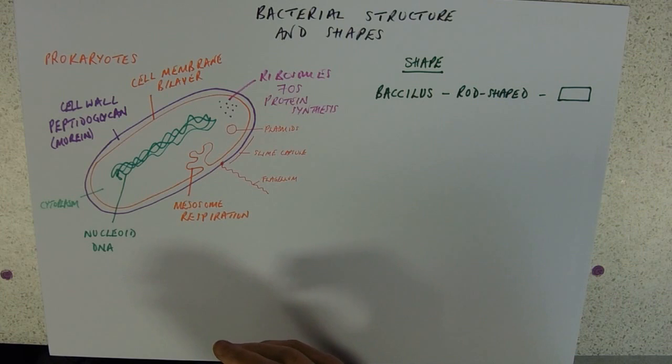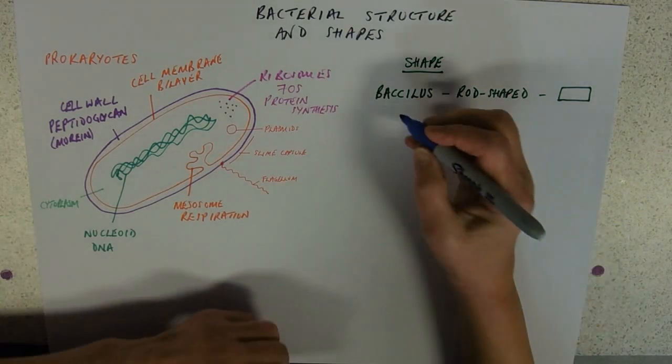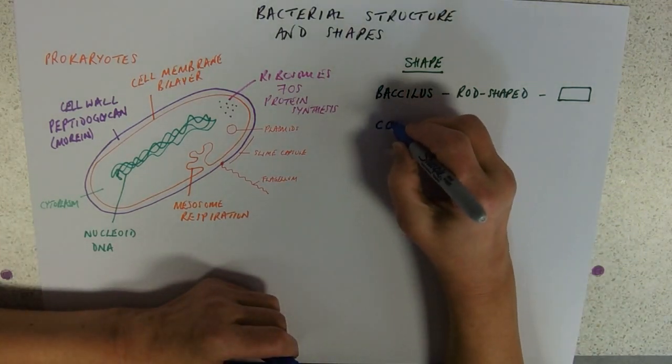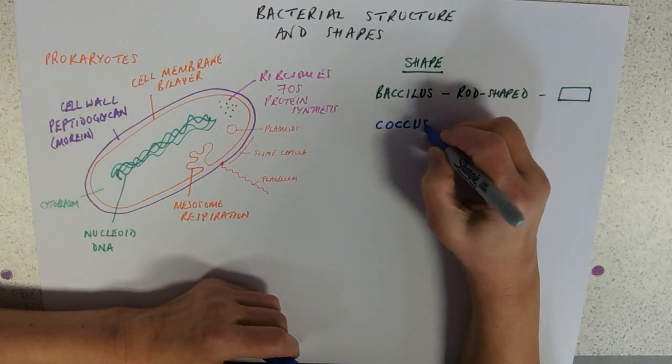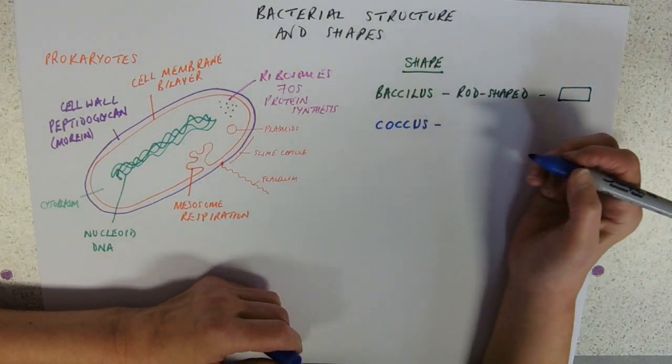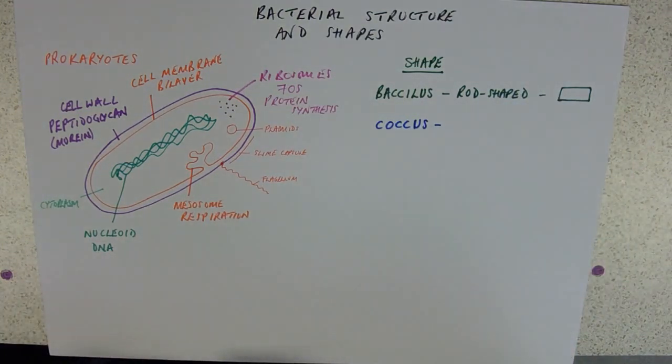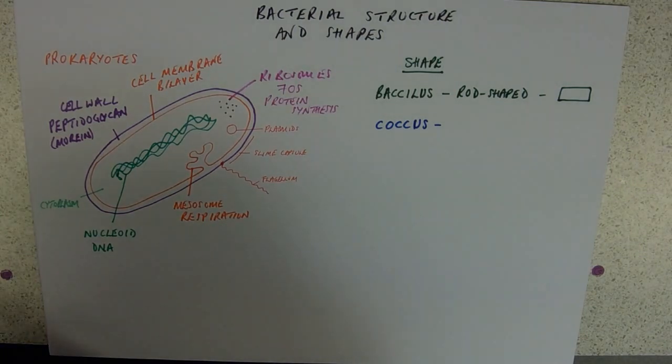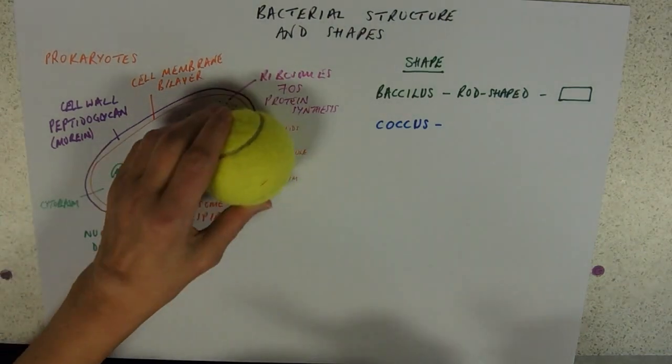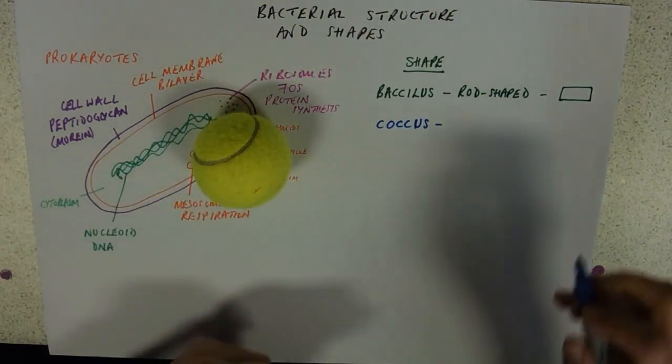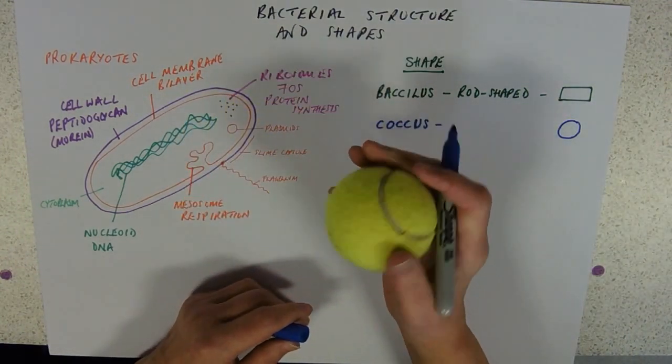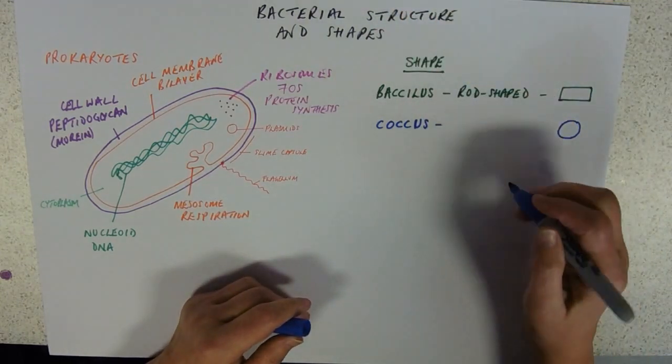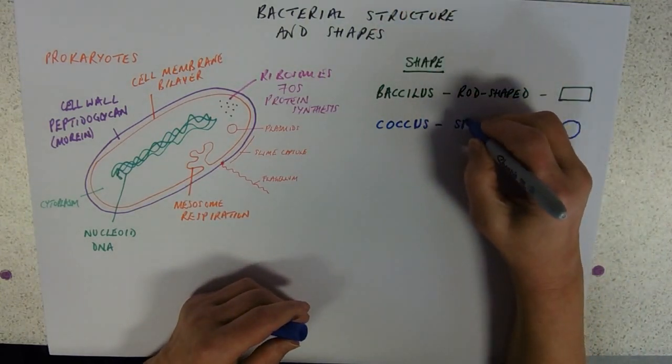We also have, my longtime favourite, the cocci. And again, singular, coccus. Now, these are not circular, as it says on Wikipedia. Because, although I would draw that ball as that, that ball happens to be a sphere. So, these are spherical bacteria.